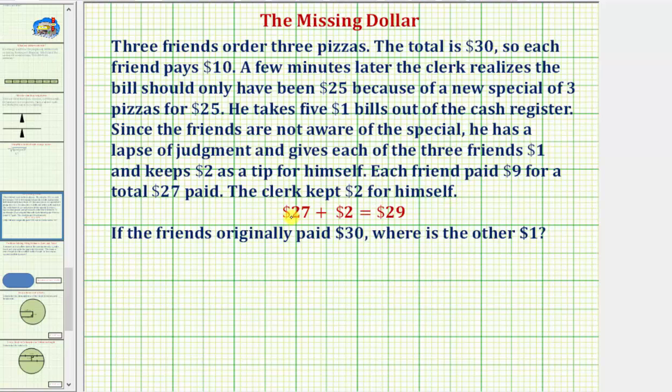So that would be $27 plus $2 equals $29. If the friends originally paid $30, where is the other $1?